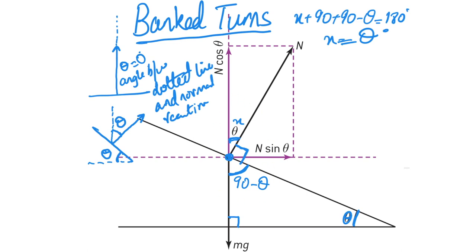Now this angle over here is theta and this is N. Understand the resolution of a vector: this is vector N, and its two components will be N sin θ — this way — and N cos θ — upwards. N sin θ should be drawn on the object because that's where the force is being applied. So N sin θ is horizontal and N cos θ is right up.